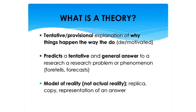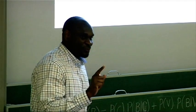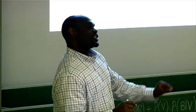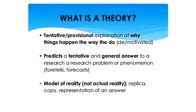A theory predicts a tentative and general answer to a research problem or phenomenon under study. It predicts a tentative, not a permanent, not a final answer — a tentative answer. And it provides a general answer, not a specific answer, because the specific answer will only be generated after the study has been completed. A theory is a model of reality. It's not the actual reality. It's a replica, a copy, a representation, a symbolism of the answer to a research phenomenon. Therefore, when you have a theory, you haven't finalized or concluded your study. It gives you a general answer to the research problem you are investigating.